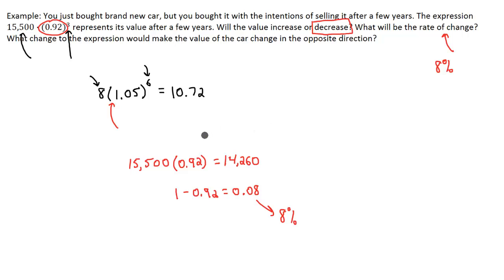So now what would I have to do to this expression to make our value change in the opposite direction? Well, back to this number right here, the base. In my previous example, when we were working with hourly rate, we multiplied it by 1.05. Using that 1, we would grow. So we want to change this so that we have a number bigger than 1. So if we are decreasing by 8% and instead we wanted to have our value increase by 8%, you would change our base number right here to be 1.08. And that would take 108% of our initial value, which was that 15,500.